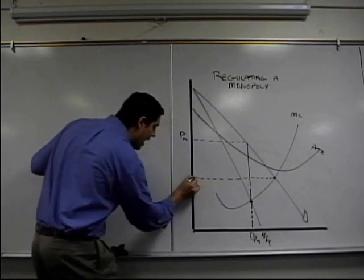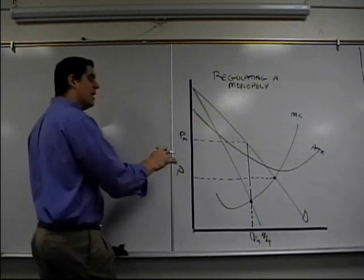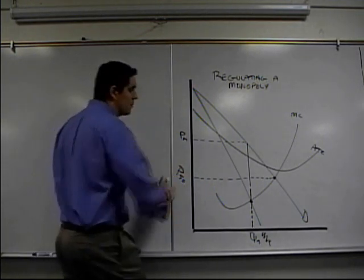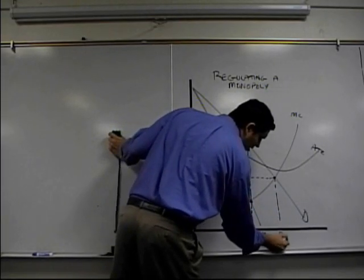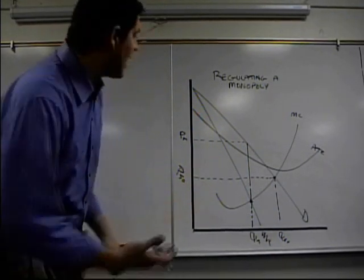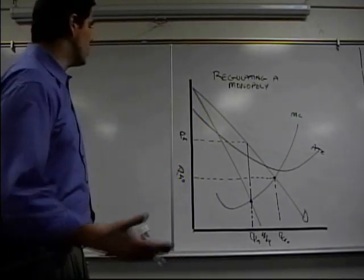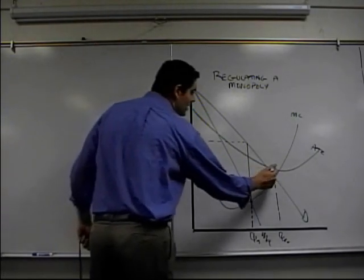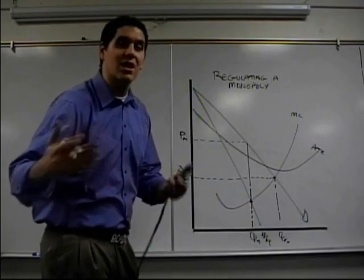And the government would come in and set up a price right here, which we're going to call socially optimal price. Boom. And that would give you the quantity that's socially optimal. But there's a problem with that. Just look. If they do that, we're going to have a huge loss. The firm's going to produce there. The ATC is going to be higher. And now the government has to come in and subsidize them.